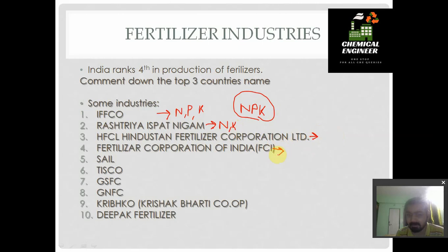Fertilizer Corporation of India generally produces nitrogenous-based fertilizers. SAIL and TISCO are mainly for the production of phosphorus and potassium based fertilizers. Nitrogenous fertilizers are produced in almost every industry. GNFC and GSFC are both NPK specialists and are present in Gujarat. They are actually among the biggest industries for fertilizer and have highly equipped machineries.